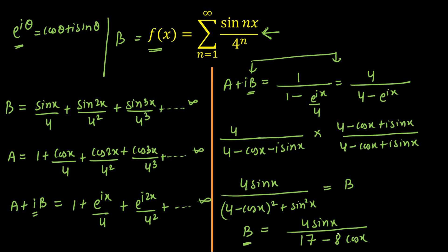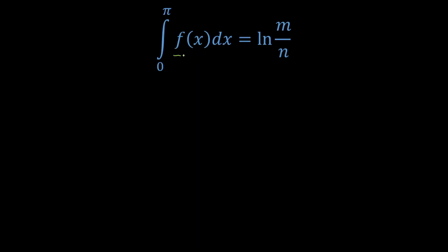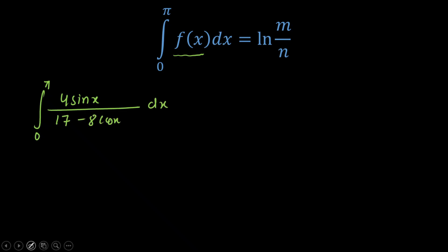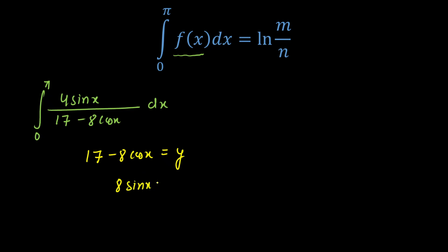Now that we have f(x), we can easily integrate — it will be a piece of cake. We need to evaluate the integral from 0 to pi of 4 sin(x) / (17 − 8 cos x) dx. The function and its derivative are clearly visible here, so my substitution will be y = 17 − 8 cos(x). Differentiating both sides gives 8 sin(x) dx = dy.